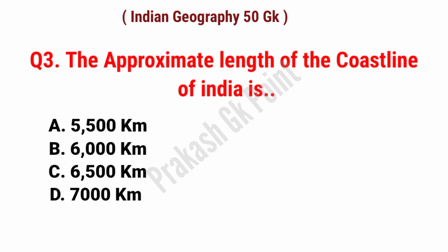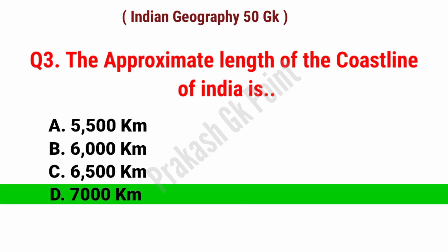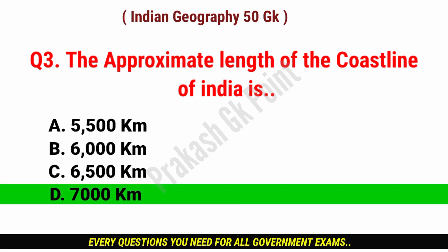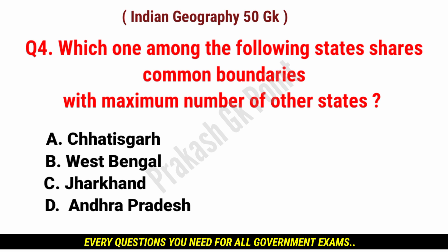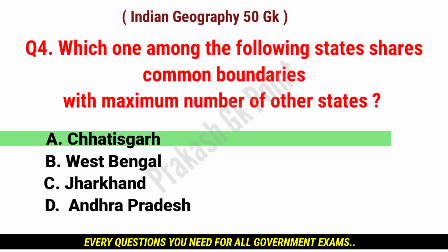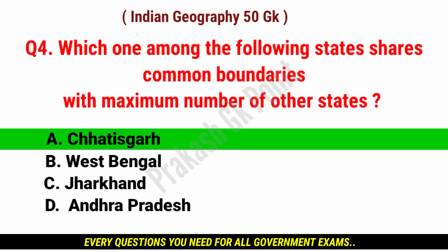The approximate length of the coastline of India is? Answer: option D, 7000 km. Which one among the following states shares common boundaries with the maximum number of other states? Answer: option A, Chhattisgarh.